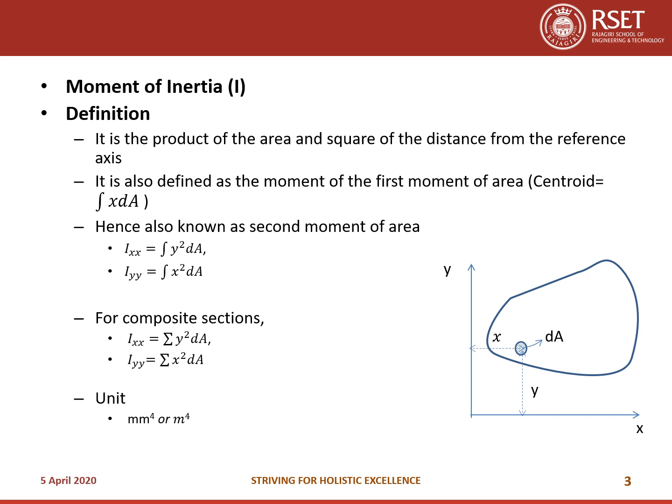So how will you define Moment of Inertia? Moment of Inertia is the product of the area and the square of the distance from the reference axis. Let us consider x and y as reference axes and small x and small y as the distance from the reference axis to the area dA. Then Ixx equals integral y² dA and Iyy equals integral x² dA. Since centroid is integral x·dA divided by integral dA, that is the first moment of area, Moment of Inertia — being integral x²·dA — is also known as the second moment of area.